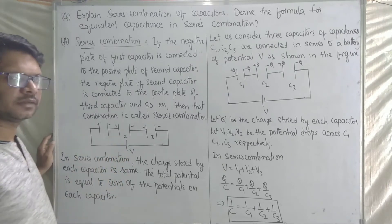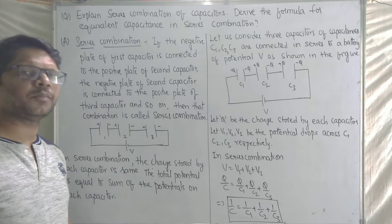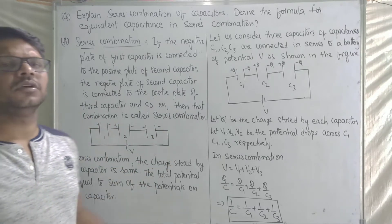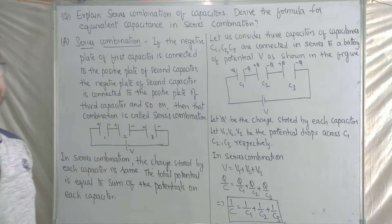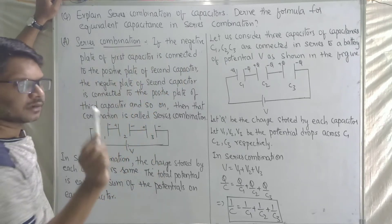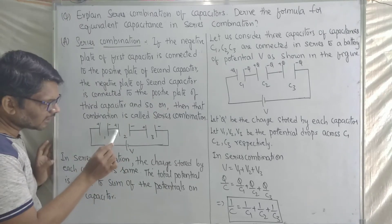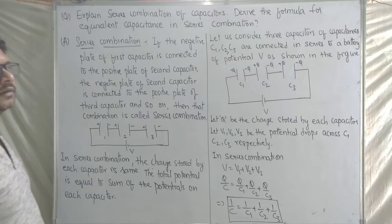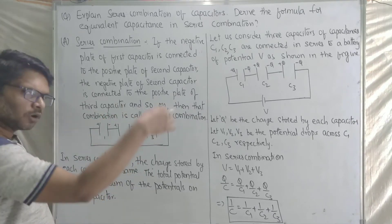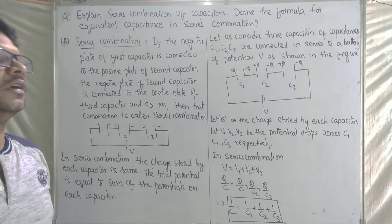Similarly, the negative plate of the second capacitor is connected to the positive plate of the third capacitor. Likewise, the negative plate of the third capacitor is connected to the positive plate of the fourth capacitor. That combination is called series combination.